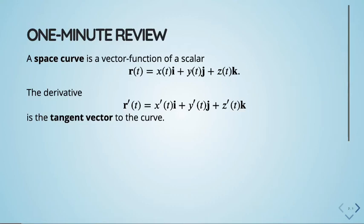Every vector-valued function has each of its components as a scalar-valued function: x(t)·i, y(t)·j, z(t)·k. The reason we start with these is that doing our typical calculus operations goes through easily. If you want to take a limit of a vector-valued function, take limits of each component. If you want to take a derivative, just take derivatives of each component.